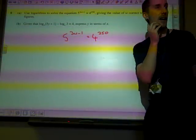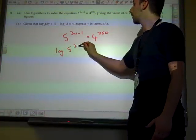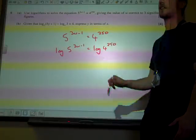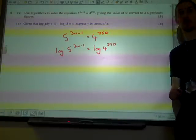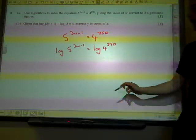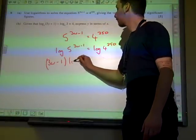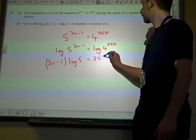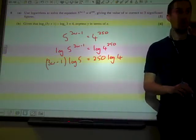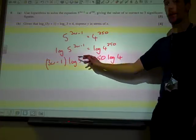So what we just said, we take logs of both sides. That's log base 10, I just write log. Yes, thanks Harry. And then bring down the powers. We're trying to get w on its own eventually, so we're going to divide by log 5.